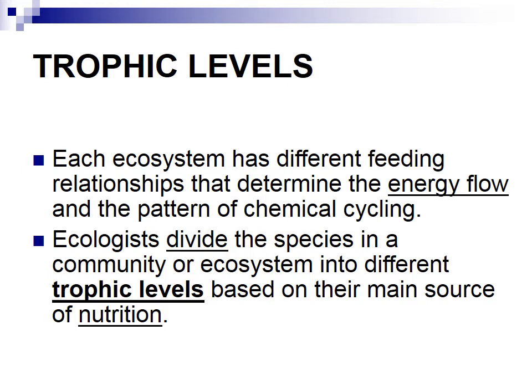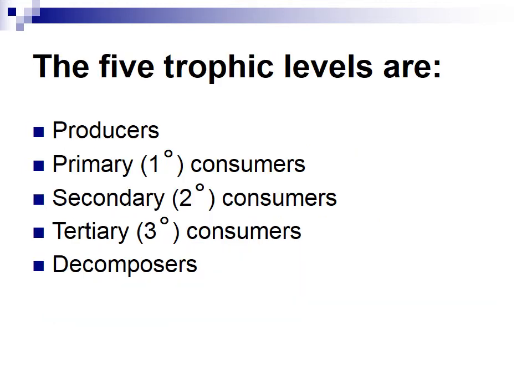Trophic levels — each ecosystem has different feeding relationships that determine energy flow and the pattern of chemical cycling. Ecologists divide species in a community or ecosystem into different trophic levels based on their main source of nutrition. Just because a cow sometimes eats insects living on the grass doesn't make the cow a carnivore. The cow is a herbivore. There are five trophic levels: producers, primary consumers, secondary consumers, tertiary consumers, and decomposers. You'll see the energy decrease when you go from level to level.